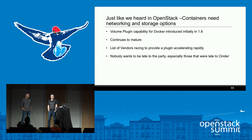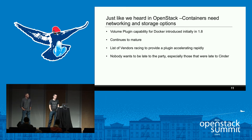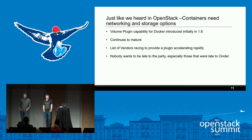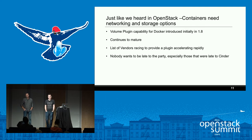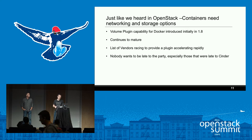There's always been the ability to do storage in containers, but automated provisioning didn't really come along until Docker 1.8 — it's gotten a lot better in recent versions and continues to mature. There's a whole ecosystem of vendors providing plugins. We think it's straightforward: if you've got OpenStack, taking advantage of Cinder to get your volume services is pretty simple.